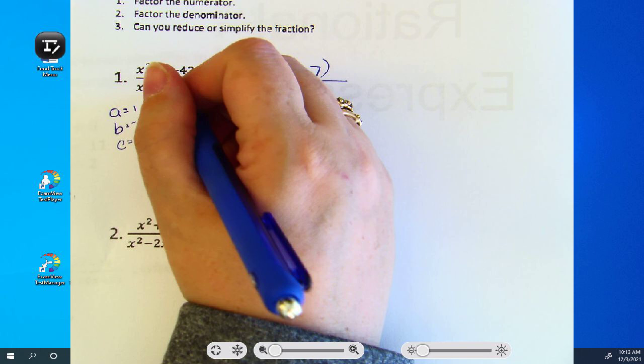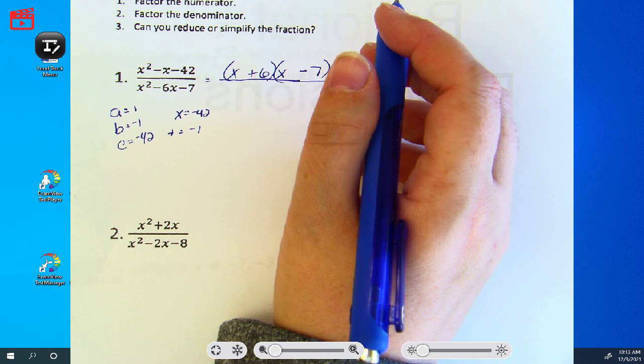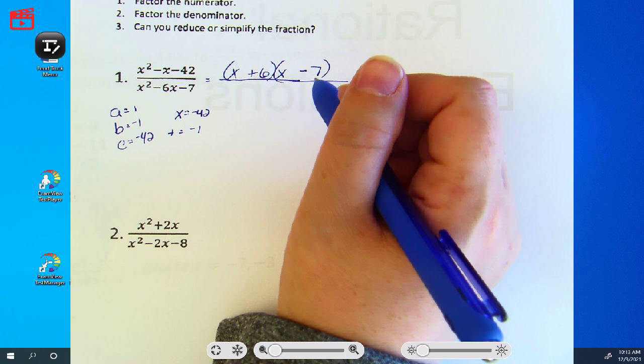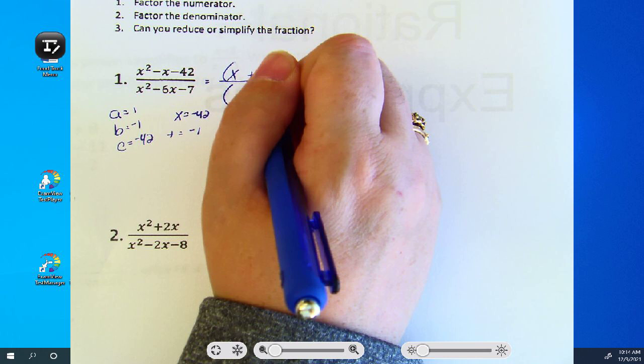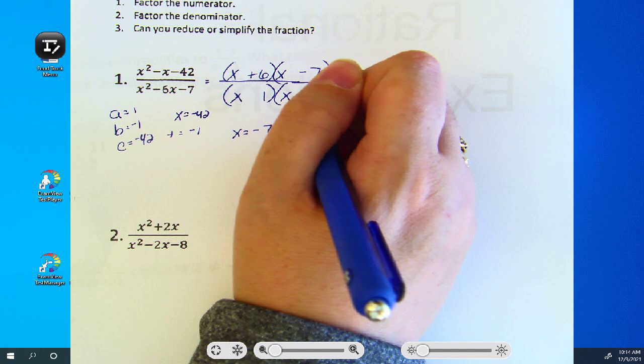In the denominator, is there a GCF? No. So binomial, trinomial? Trinomial. What can I multiply to get negative 7, add to get negative 6? 1 and 7. Which one has to be negative?